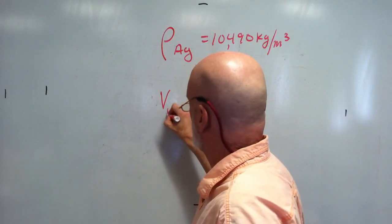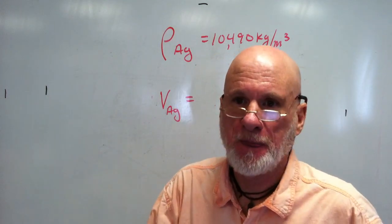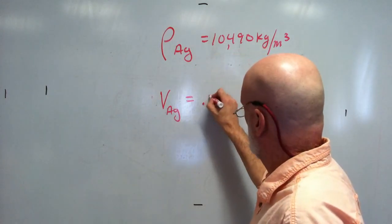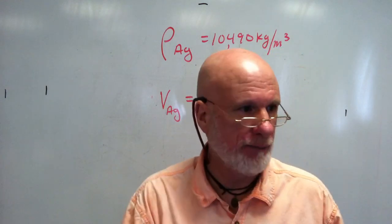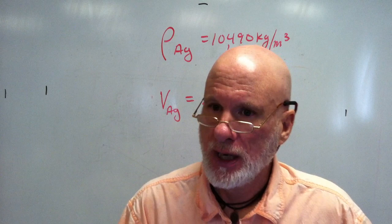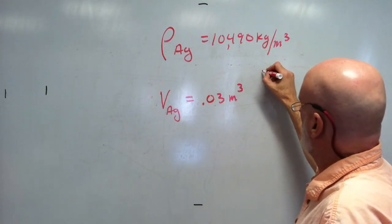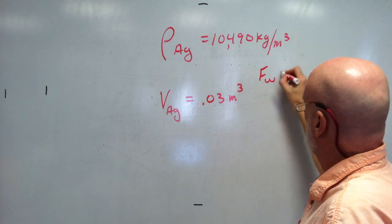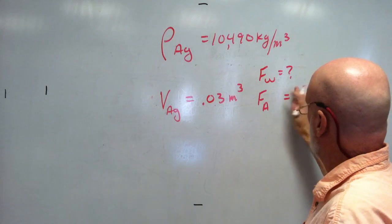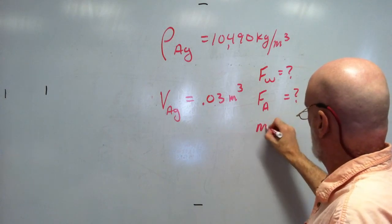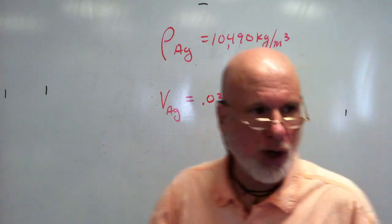Let's say we have a volume of silver equivalent to 0.03 cubic meters. I want to know the weight of that silver, the apparent weight of the silver, and the mass of the silver — all three.